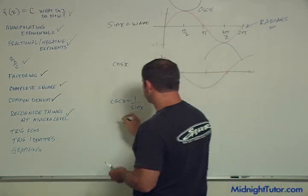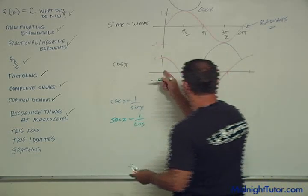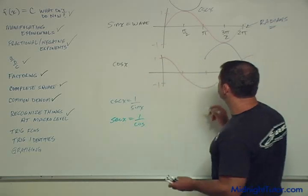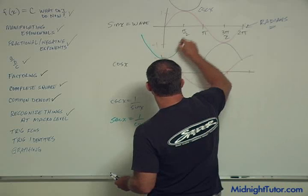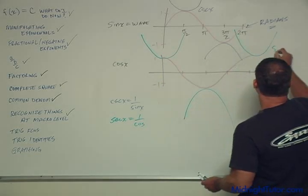Now, secant of x is 1 over cosine. So it's just the same thing except it's shifted, right? Just like the sine and cosine are the same thing, just shifted. Right? That's secant of x.